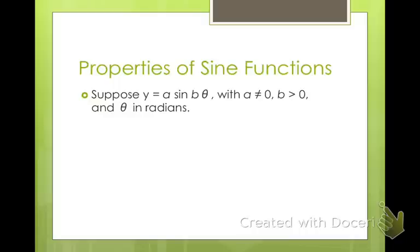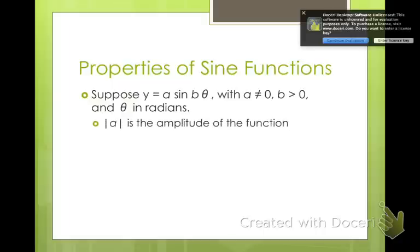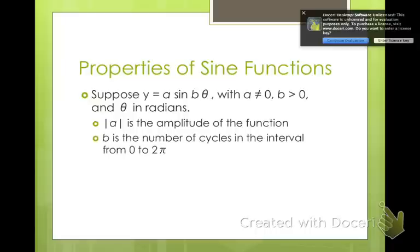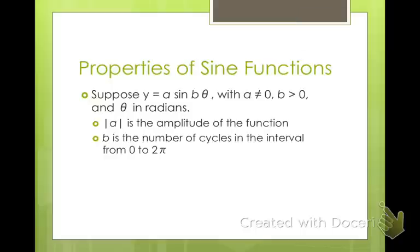So properties of sine functions. Suppose y equals a sine of b theta, where a is not 0 and b is greater than 0, and theta is in radians. So we're going to look at a. This is the amplitude of the function. If a is positive, it starts going up first. If a is negative, it starts going down first. b is the number of cycles in the interval from 0 to 2 pi. So the number after your sine is going to tell you how many cycles you're going to complete. 2 pi over b is the period of the function. So this tells you your period. How many cycles do you complete?